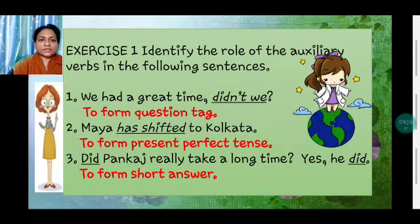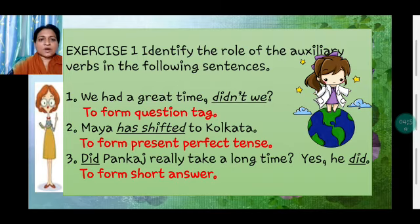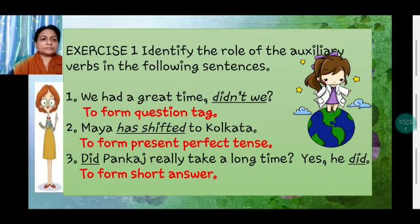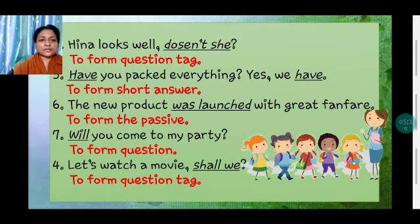Based on what we have learned, let's solve Exercise 1: identify the role of auxiliary verbs in the following sentences. 'We had a great time, didn't we?' — 'didn't we' is the auxiliary verb used for making a question tag. 'Maya has shifted to Kolkata' — it is to form the present perfect tense. 'Did Pankaj really take a long time? Yes, he did.' — to form a short answer. 'Heena looks well, doesn't she?' — this is a question tag.